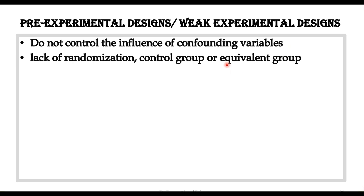जैसे experimental design में हम randomization करते हैं, वह experiment strong होता है। तो weak experimental design में randomization missing है। इसी तरह, इसमें control group या equivalent group भी missing होते हैं, और इसी वजह से यह designs weak experimental designs होते हैं।